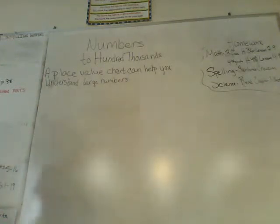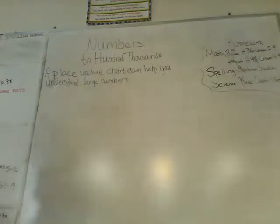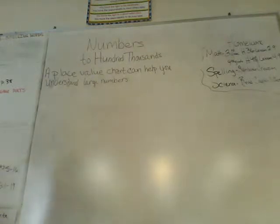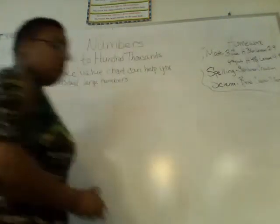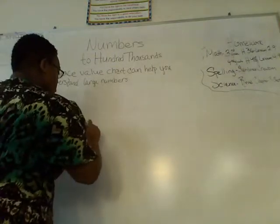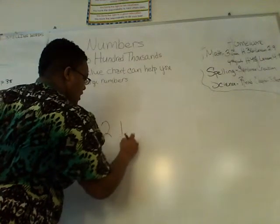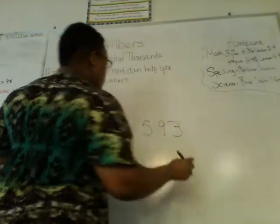New Mexico has an area of 121,593 square miles. Rhode Island has an area of 1,214 square miles. Now let's use a place value chart so we can get a better understanding of what's going on here. We said that New Mexico had an area of 121,593 square miles.